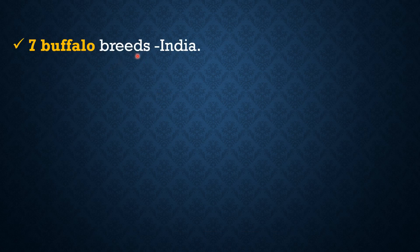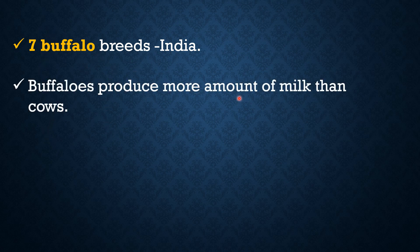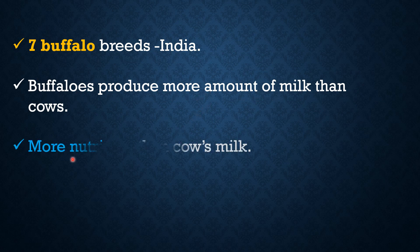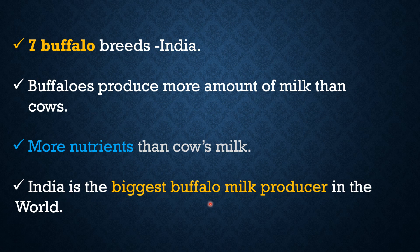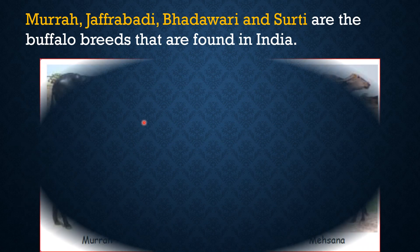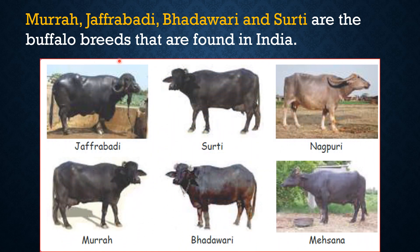There are seven buffalo breeds. India is the biggest buffalo milk producer in the world. There are 20 buffalo breeds, including Jaffarabadi, Surti, Nili-Ravi, Murra, Bhadawari and Mehsana.